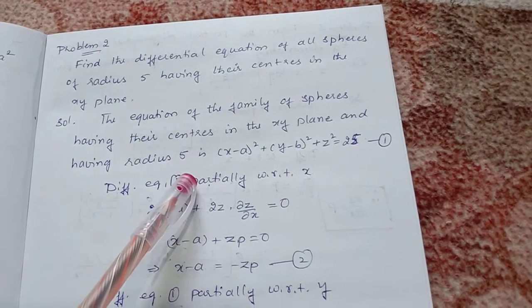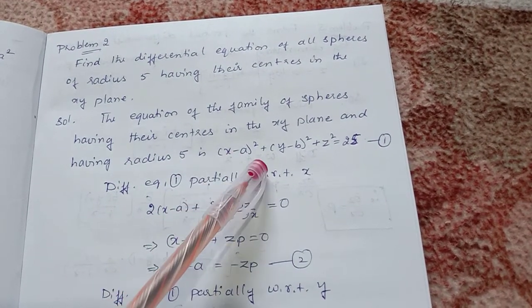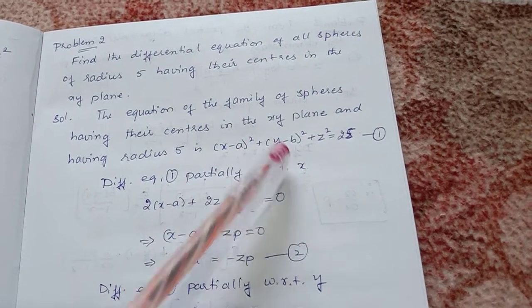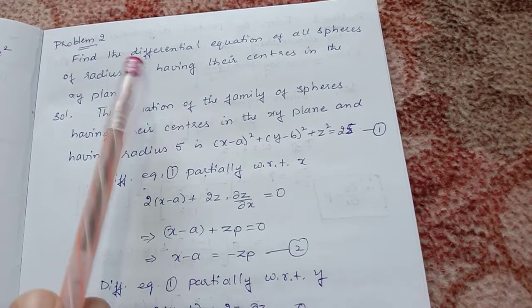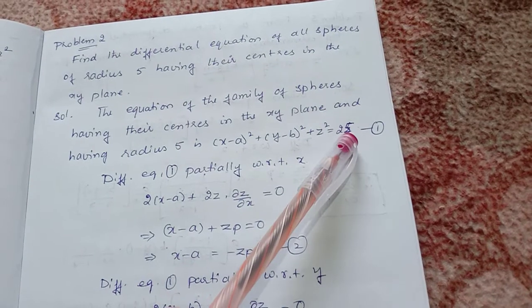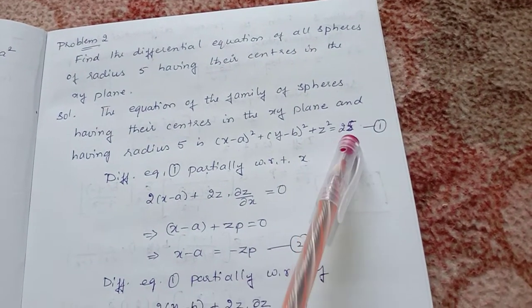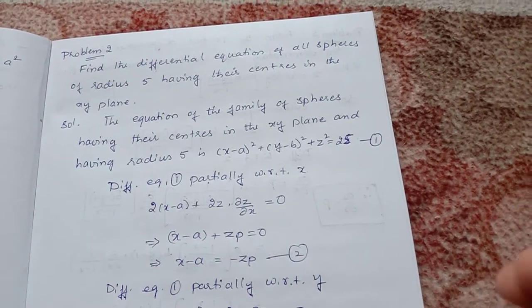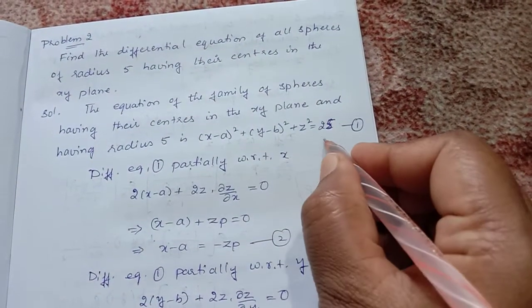and having radius phi is (x - a)² + (y - b)² + z² equal to radius is given as phi. So here r square. The value of r is phi, phi square equal to 25.